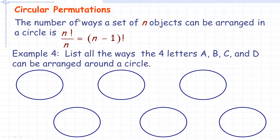Circular permutations: circular just means there's no real start. It doesn't have to be around a circle — it could be around a rectangular table with no designated start. The number of ways n objects can be arranged in a circle is n factorial divided by n, which equals n minus one factorial. For example, if n is 10, then 10 factorial divided by 10 is 9 factorial.